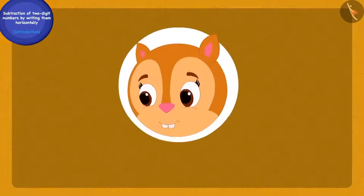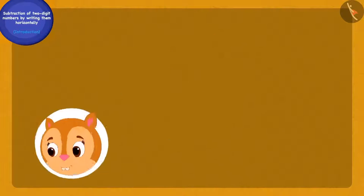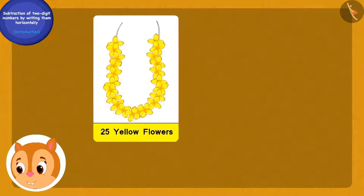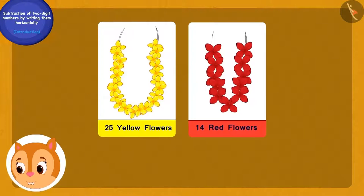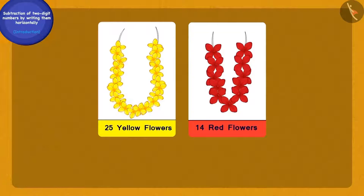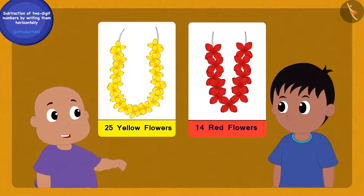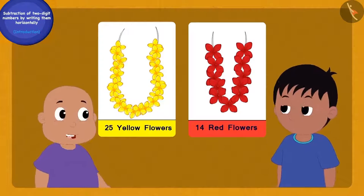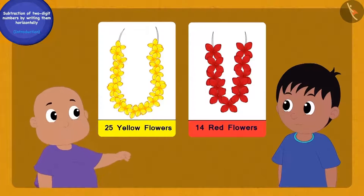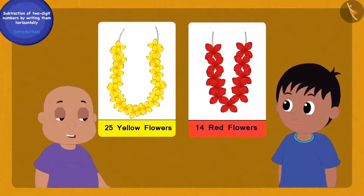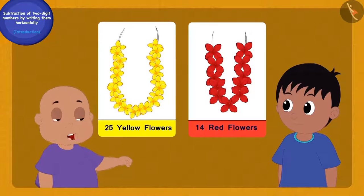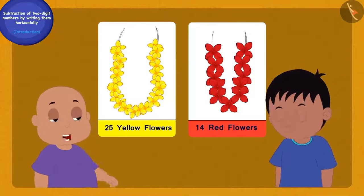One garland of Chanda had 25 yellow flowers and the other garland had 14 red flowers. Bablu asked Raju: can you tell me how many more flowers are there in Chanda's yellow flower garland than her red flower garland?